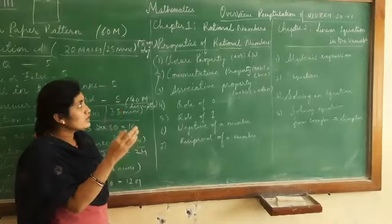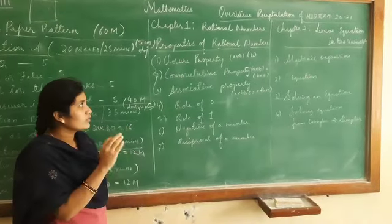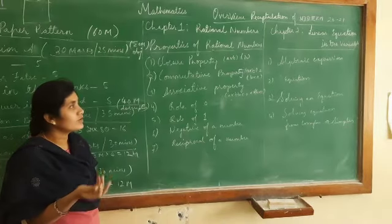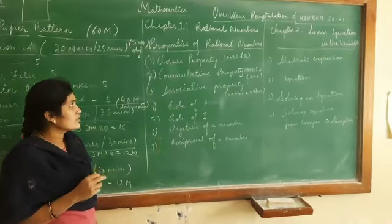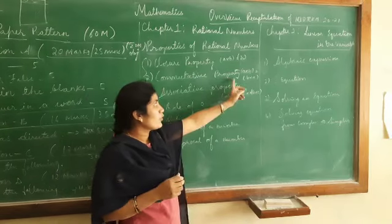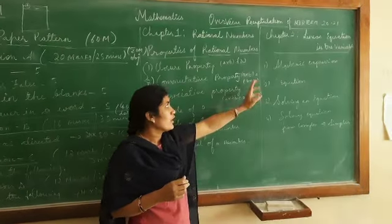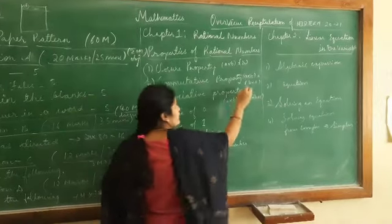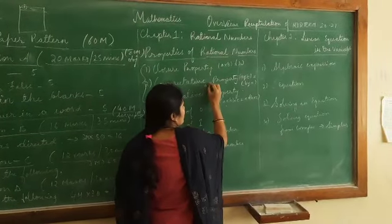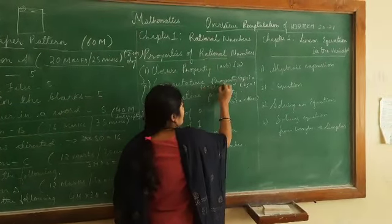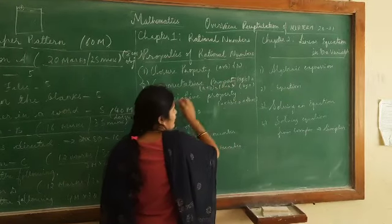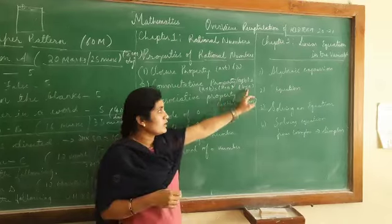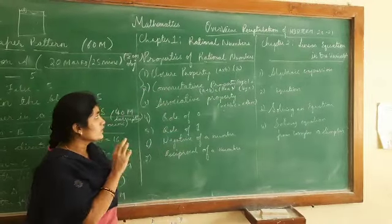These three properties are tested for addition, subtraction, multiplication, and division. Closure property - we test whether closure holds for addition, subtraction, multiplication, and division. Commutative property: a into b equals b into a, and a plus b equals b plus a - we test for all basic operations.